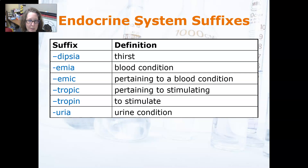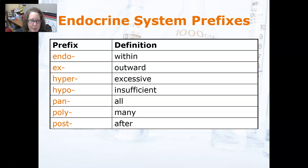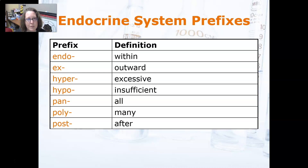Hypoglycemia, for example, would be low blood sugar. Now let's go with the prefixes. Endo means within — endocrine means to secrete within the bloodstream, which is where we get the endocrine system. Ex means outward, so the exocrine glands secrete outward into a tube or an open space.